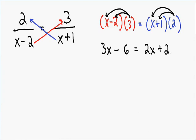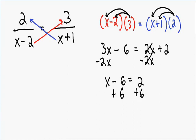Now let's get all x terms on one side and all constants on the other. I'll subtract 2x from both sides. On the left, 3x minus 2x equals x, and we also have negative 6. On the right, the 2x and negative 2x cancel, leaving positive 2. Adding 6 to both sides, the negative 6 cancels on the left, and on the right we have 2 plus 6 equals 8. So our final answer is x equals 8.